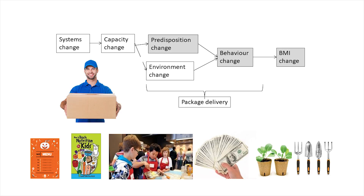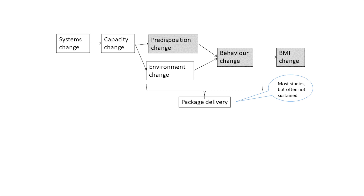We call interventions at this level 'package delivery' because they are usually a package of interventions pre-developed by academics, containing for example things like curriculum materials, cooking programs, funding to start school gardens, and so on. The package of strategies is usually implemented with fidelity in a short-term controlled trial setting until the grant finishes, and then the package is delivered no more.